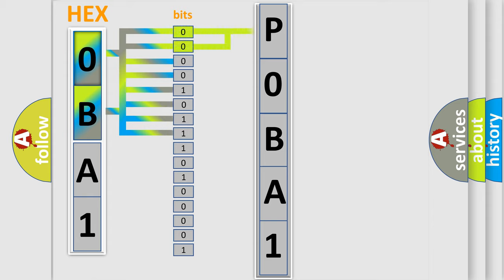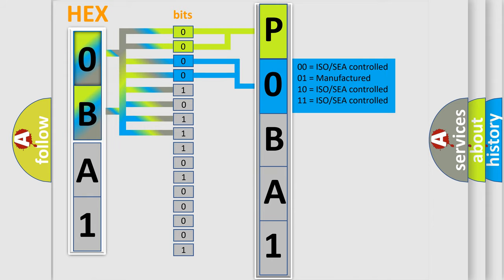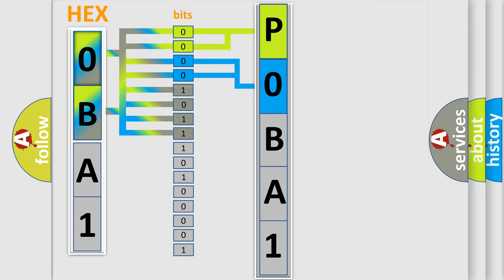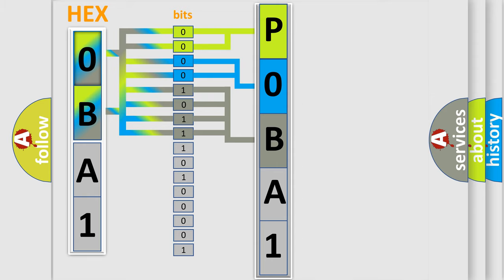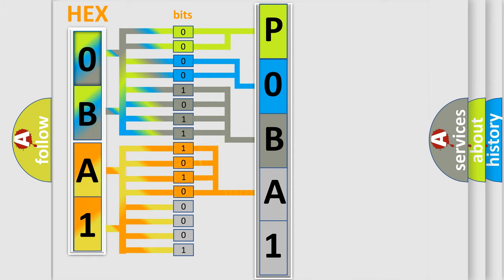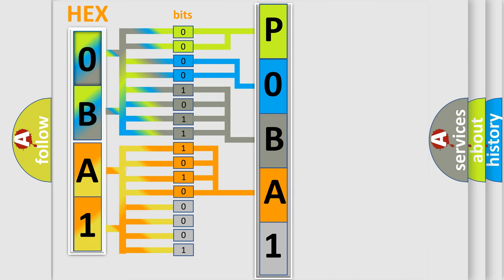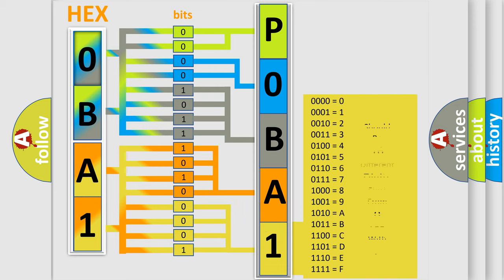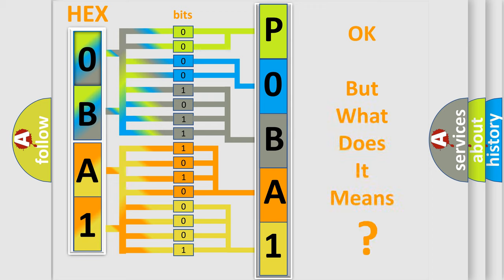By combining the first two bits, the basic character of the error code is expressed. The next two bits determine the second character. The last four bits of the first byte define the third character of the code. The second byte is composed of a combination of eight bits: the first four bits determine the fourth character, and the last four bits define the fifth character. A single byte conceals 256 possible combinations. We now know how the diagnostic tool translates the received information into a more comprehensible format.